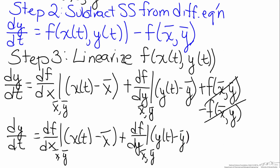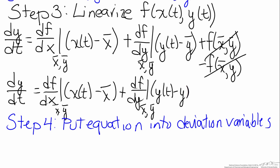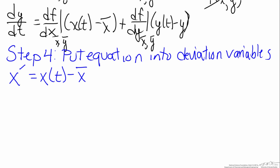The last step is to put everything into deviation variables. Recall that the definition of a deviation variable is that x-prime equals x(t) minus x-bar. For this equation we'll have not just the deviation variable x-prime, but also a similar value for y-prime.